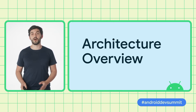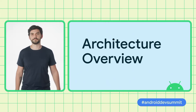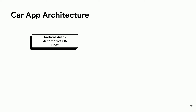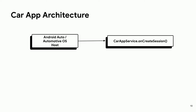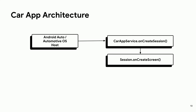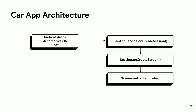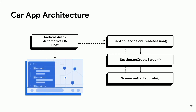Now that we know what the Car App Library can offer you, let's have a look at the architecture. When your app is launched in the car, a host application running on either Android Auto or Automotive OS will connect to a Car App Service that you will extend. In your Car App Service, you will override onCreateSession, which returns a session instance corresponding to the current connection to the host. The session is responsible for returning the screen instance to use the first time the app is started by overriding onCreateScreen. Then each of your screen classes will implement onGetTemplate, which returns a template object representing the state of the UI to display in the car screen. The template will then be fed back to the host application, which will render the UI for you.